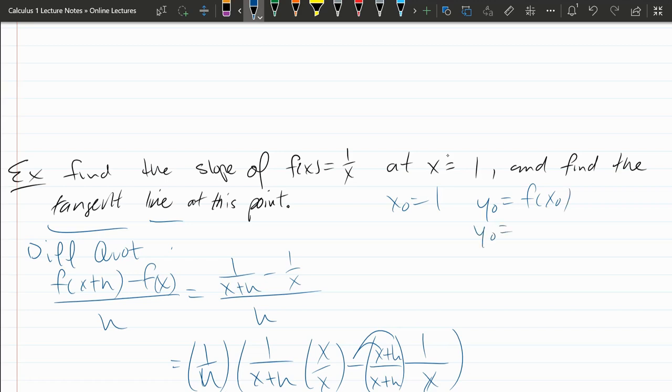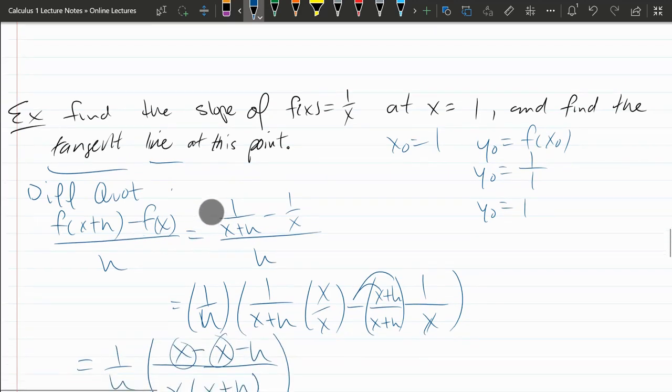So y naught, the function is one over x. So it's one over one. That reduces to one. So our y naught value is one.